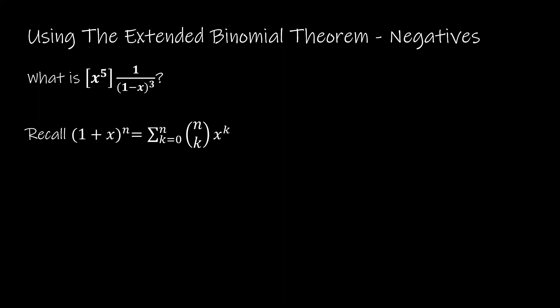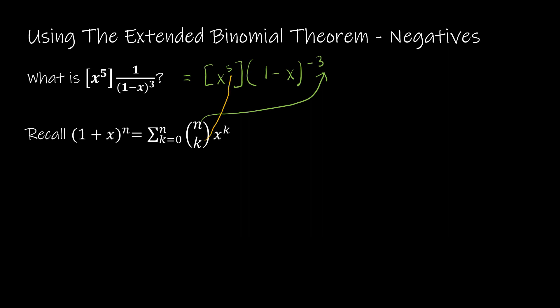You might be wondering why we need to do this. It's going to come into focus now because this is all leading up to generating functions. I'm going to solve for the coefficient of x^5 in 1/(1−x)^3. The first thing I do is rewrite the generating function as (1−x)^(−3), making it clear that n = −3 and k = 5.